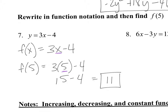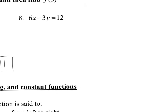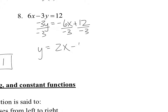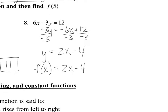Same thing for number 8, except Y is not by itself — we need to solve for Y first. Move the 6x over, which makes it negative, then divide everything by negative 3. That gives Y equals positive 2x minus 4. This linear equation is a function, so I'll change Y into F of X. Then find F of 5: plug in 5 for X anywhere you see X. That gives 10 minus 4, which is 6.